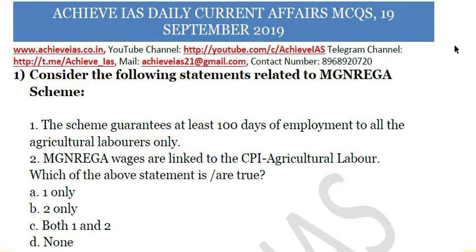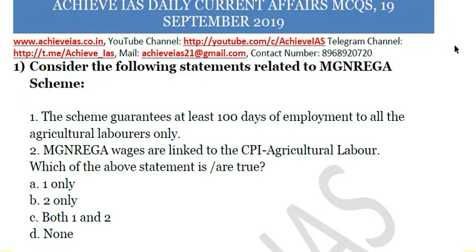The first question: consider the following statements related to MGNREGA scheme. First, the scheme guarantees at least 100 days of employment to all agricultural laborers only. Second, MGNREGA wages are linked to the CPI agricultural labor. We have to choose which of the above statements is correct. Only the second statement is correct because the first is not correct.